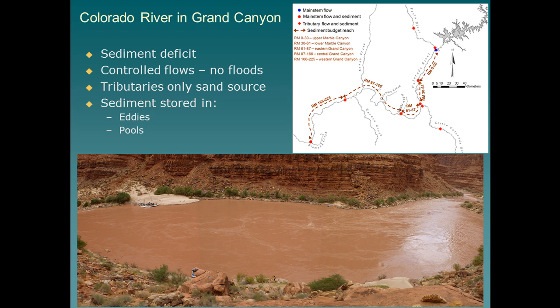All of the flow is controlled in the system and there are no floods. Base flows have been increased while peak flows have been decreased. You end up with a system that's always in the range where it can continually transport fine sediment. Before the dam, you'd have big floods and then nine months of the year where sediment accumulated on the bed to supply the next floods. The question is how can we build sandbars without driving the system further into sediment deficit? Because once it's in Lake Mead, it's not coming back without a lot of money. The only sand sources in Grand Canyon and Marble Canyon are tributaries.